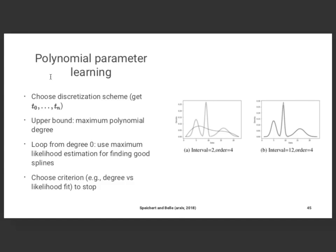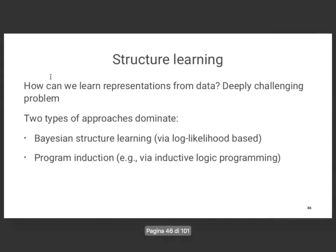Thanks for coming back. I stopped at the point where I said for parameter learning we can go beyond just numeric weights. So let's figure out: can we also learn the structure? So far we assume the structure is given — you have to figure out the weights for these formulas. The question we're going to figure out now is can we also learn the structure? The idea is you want to know the representations from data, and this is obviously much more challenging than parameter learning.